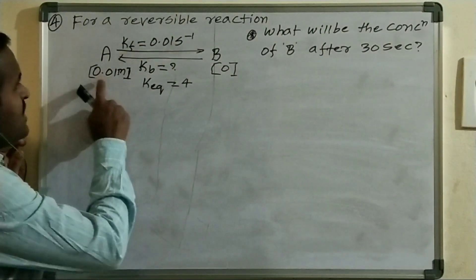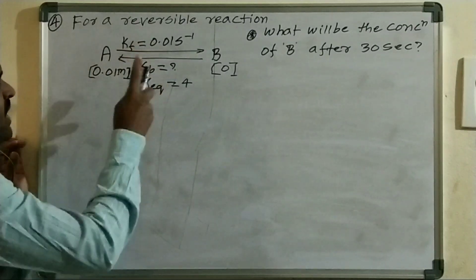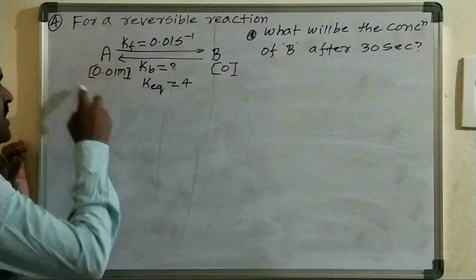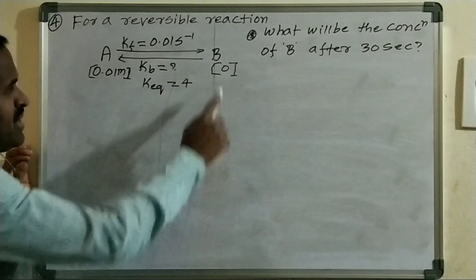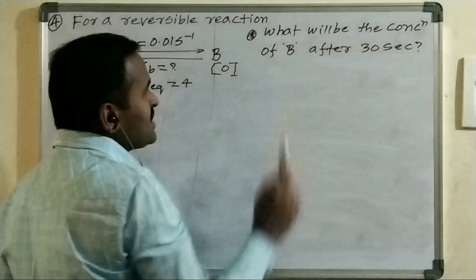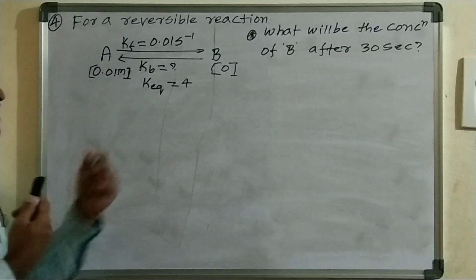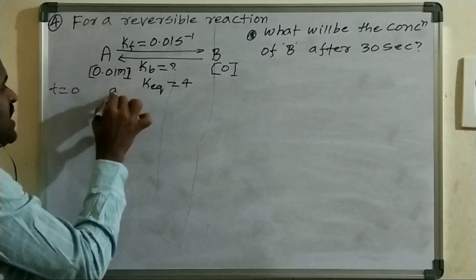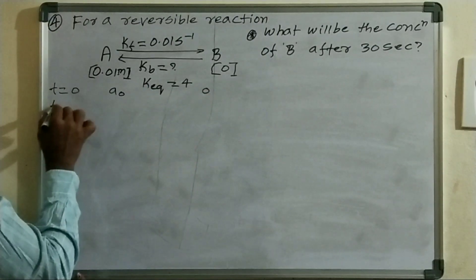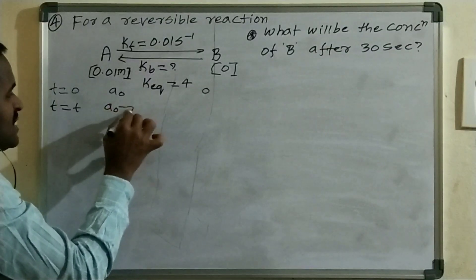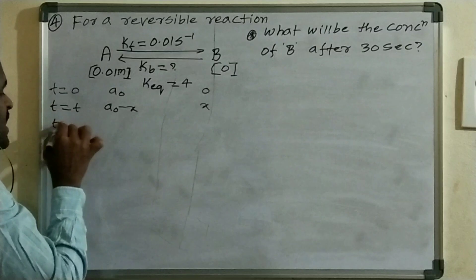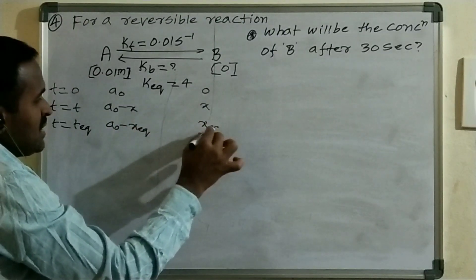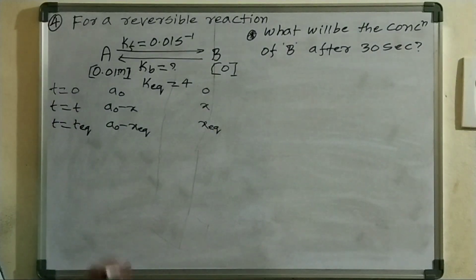Problem 4: For a reversible reaction A ⇌ B, the rate constant for the forward reaction Kf = 0.01 s⁻¹, equilibrium constant = 4, initial concentration of A = 0.01 M, and initial concentration of B = 0 M. What will be the concentration of B after 30 seconds? At t = 0: A0 and 0. At time t: A0 − X and X. At equilibrium: A0 − X_eq and X_eq.